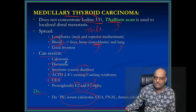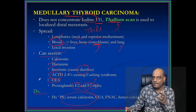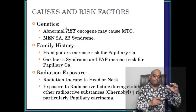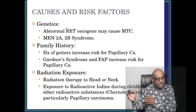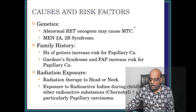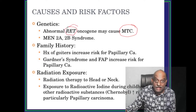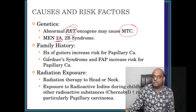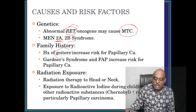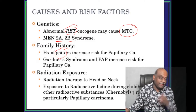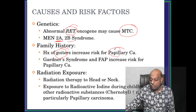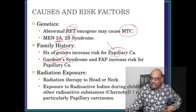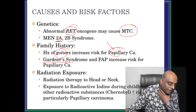Serum calcitonin is therefore used as an important marker for medullary thyroid carcinoma. Regarding risk factors for thyroid tumors: for MTC, remember RET oncogene mutations, and medullary carcinoma is also part of MEN 2A and 2B syndromes. Any family history of goiter increases the risk of papillary carcinoma. Similarly, Gardner's syndrome and FAP increase the risk of papillary carcinoma of thyroid.